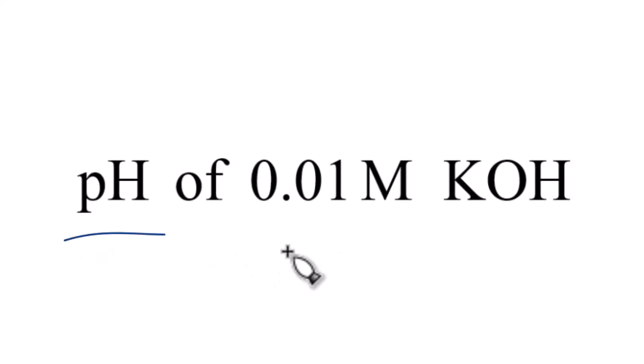If you're asked to find the pH of a 0.01 molar solution of KOH, that's potassium hydroxide, here's how you do that. So first off, potassium hydroxide, that's a base, and it's a strong base.